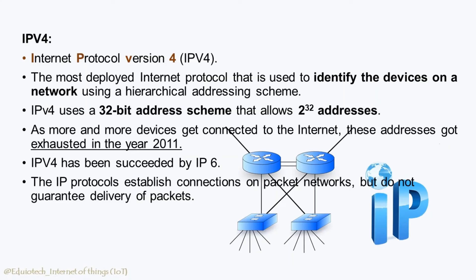IPv4 — Internet Protocol Version 4 — is the most deployed internet protocol, used to identify devices on a network using a hierarchical addressing scheme. It uses a 32-bit address scheme that allows 2 raised to 32 addresses. As more and more devices got connected to the internet, these addresses got exhausted in the year 2011, and IPv4 has since been succeeded by IPv6. The IP protocol establishes connections on packet networks but does not guarantee delivery of packets.